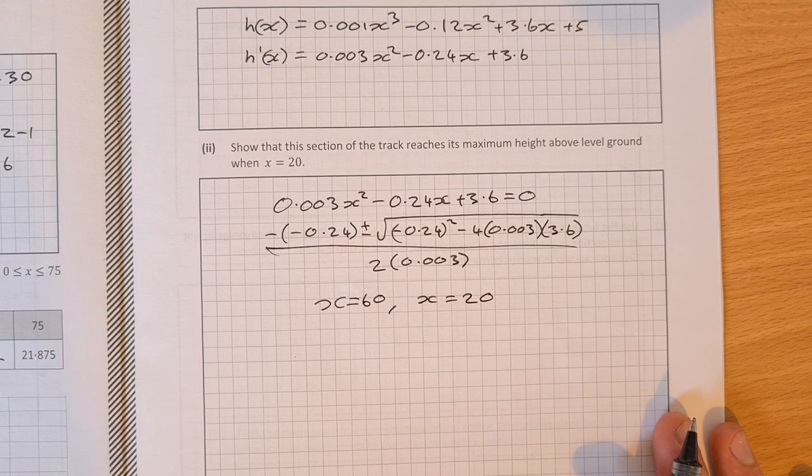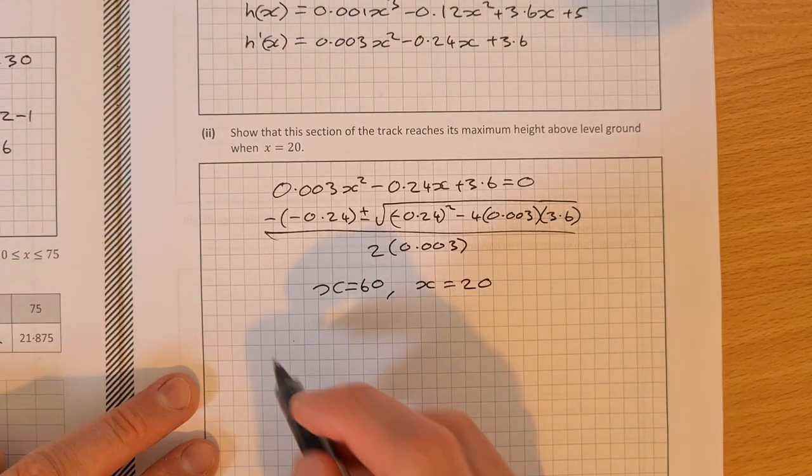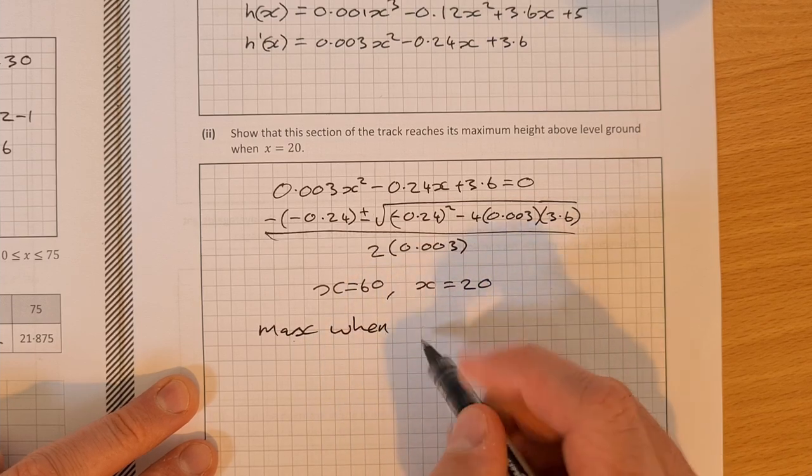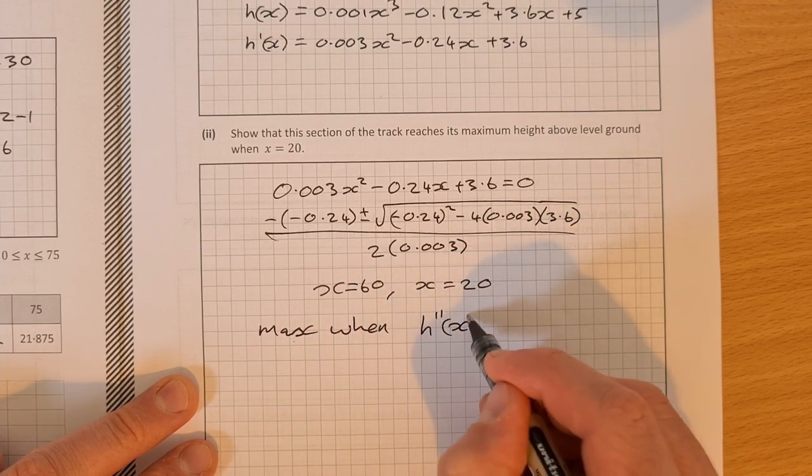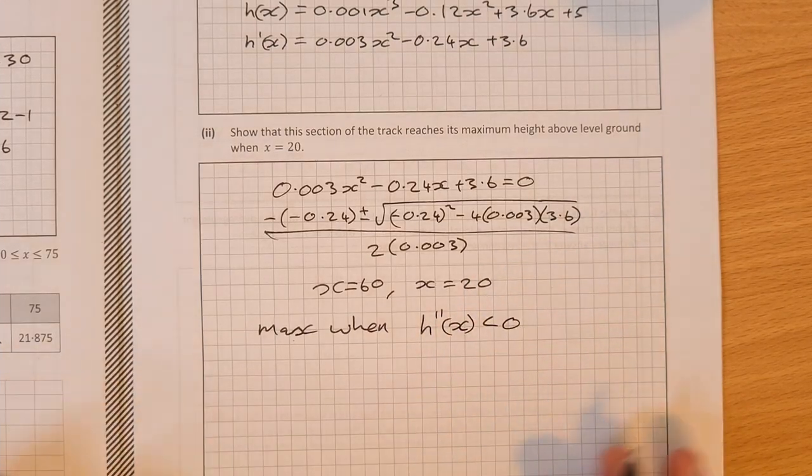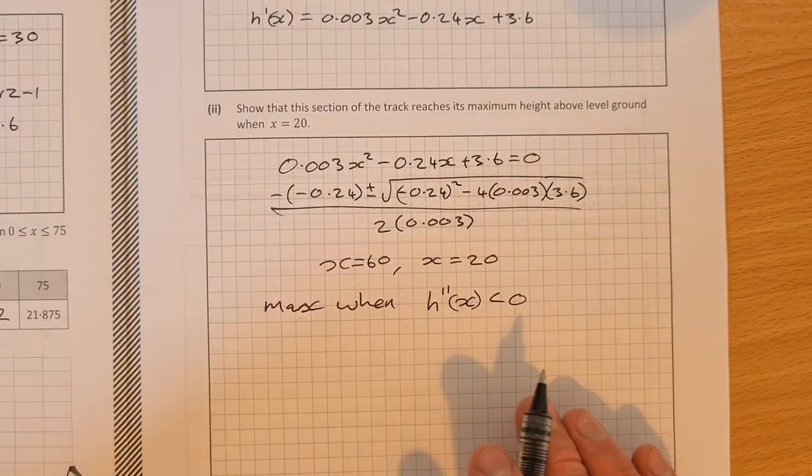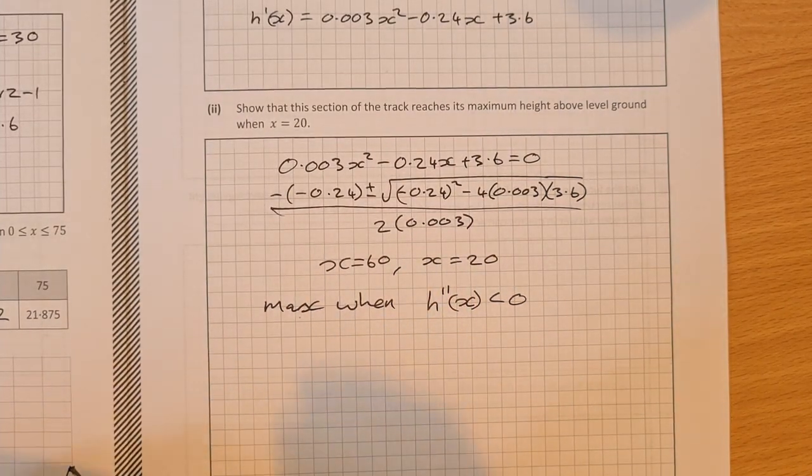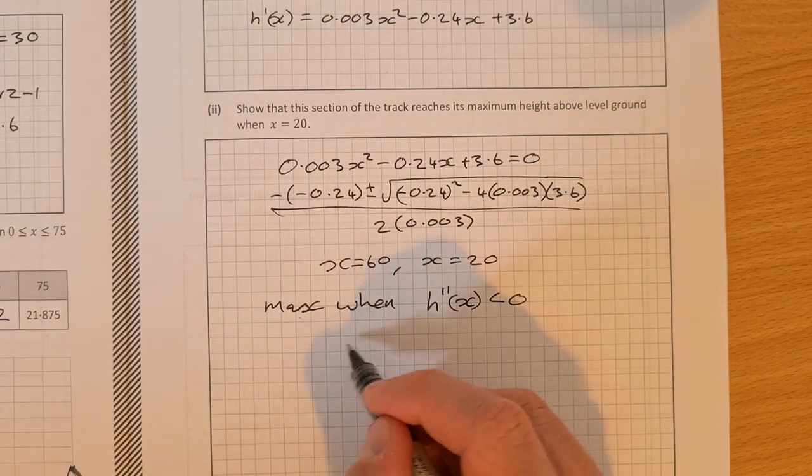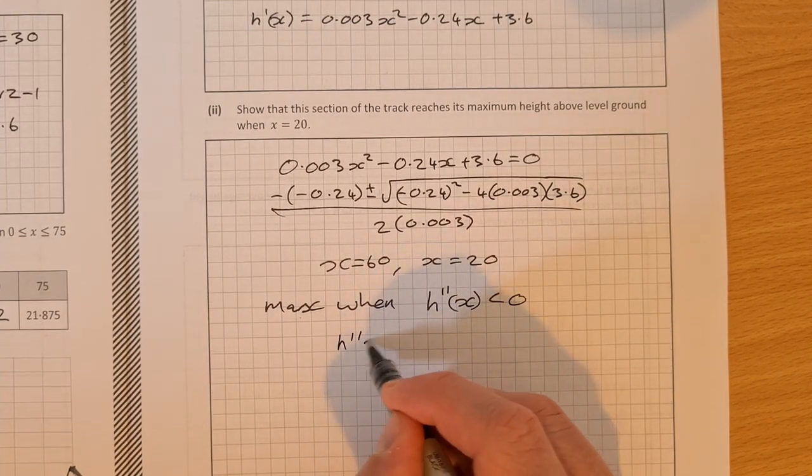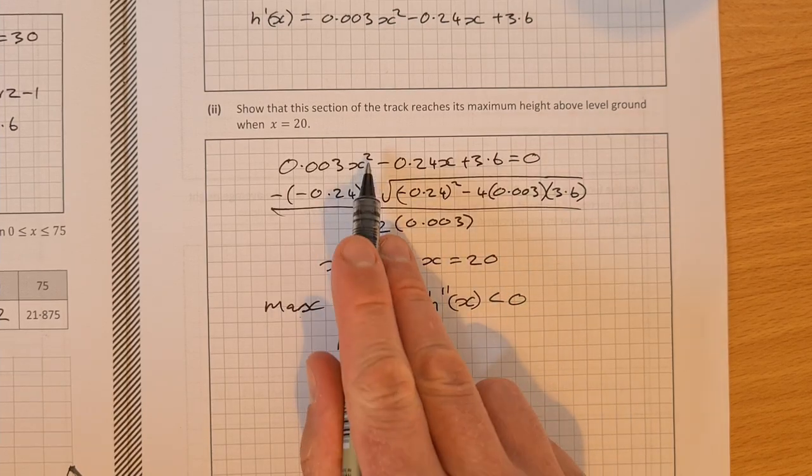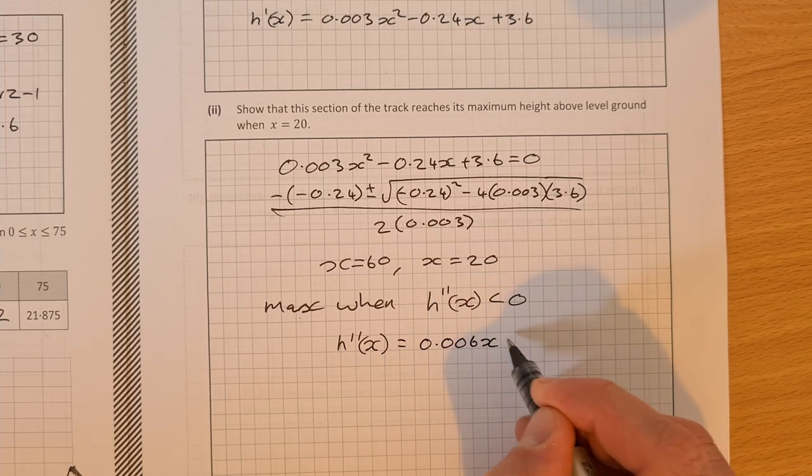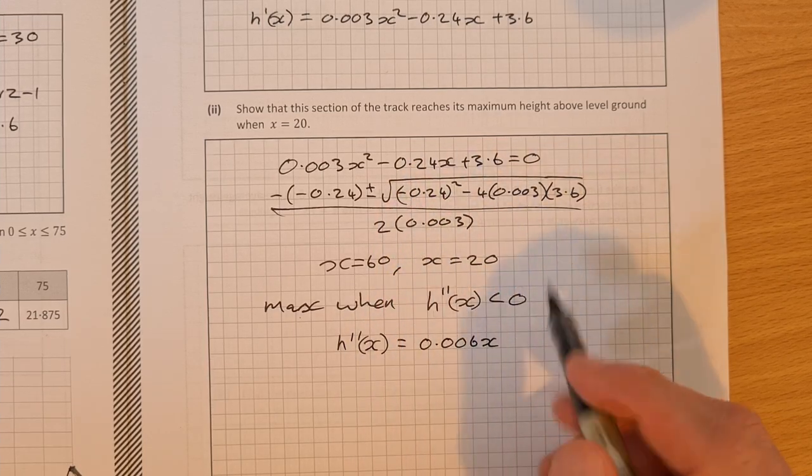So we're going to test out 20 here. So we have a max when h double prime of x is less than 0. So if we differentiate again and let it less than 0 when we have x equal to 20, we should show that it's a maximum then. So let's differentiate again. H double prime of x is equal to 2 by 0.003, 0.006x and then minus 0.24.